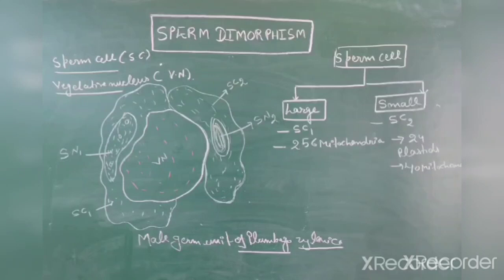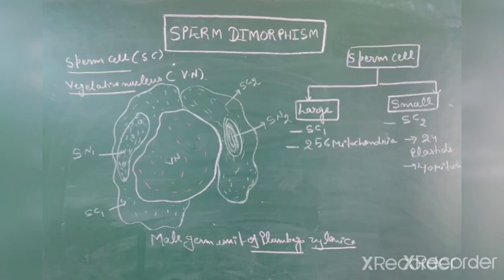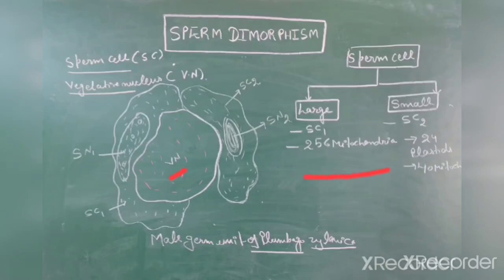In Plumbago zeylanica, there is presence of two unequal sperm cells: sperm cell 1 and sperm cell 2. Sperm cell 1 is closely associated with the vegetative nucleus, while sperm cell 2 is slightly far apart. In the larger sperm cell 1, there is presence of 256 mitochondria. In the smaller sperm cell 2, there is presence of 24 plastids and 40 mitochondria.